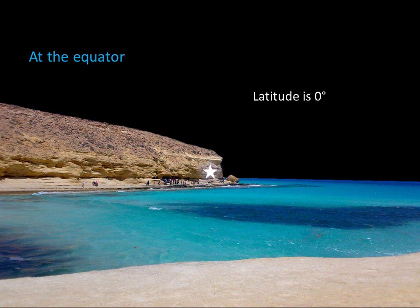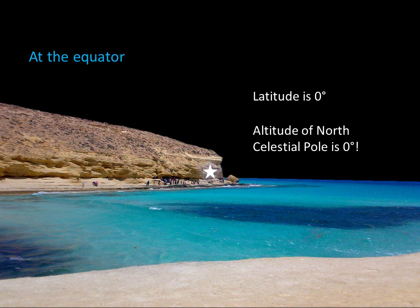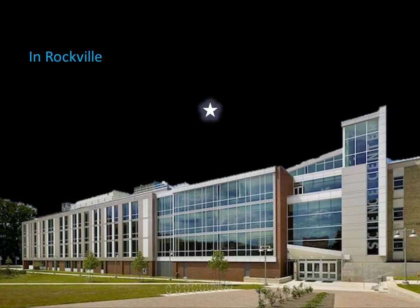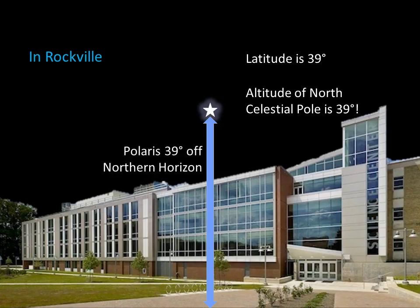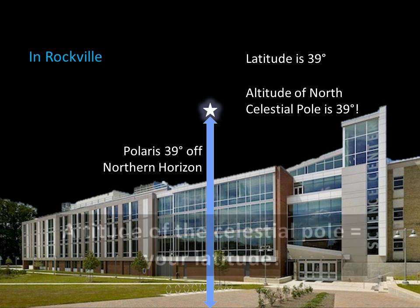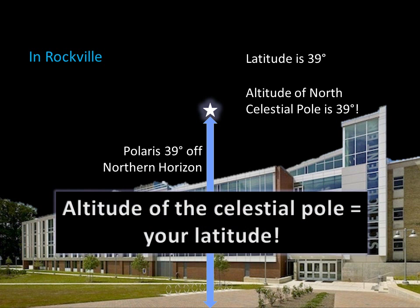The latitude at the equator is zero degrees, and the altitude of Polaris and the north celestial pole is also zero degrees at the equator. Back in Rockville, our latitude is 39 degrees — and so the altitude of Polaris and the north celestial pole is also 39 degrees. Polaris and the north celestial pole will appear to be 39 degrees off the northern horizon. The altitude of the celestial pole is always equal to your latitude.